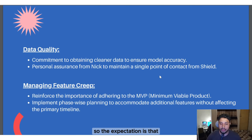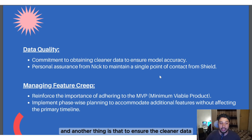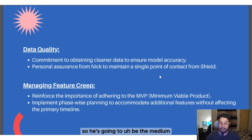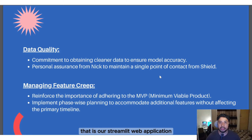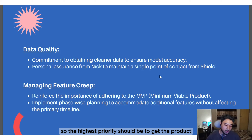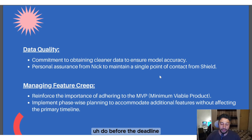Regarding data quality, there is a commitment to obtaining cleaner data to ensure model accuracy. Our project manager, Nick, will serve as the medium between the team and Shield Insurance. Additionally, managing feature scope — focusing on the minimum viable product, our estimate of the web application — means the highest priority is getting the product up and running before the deadline.